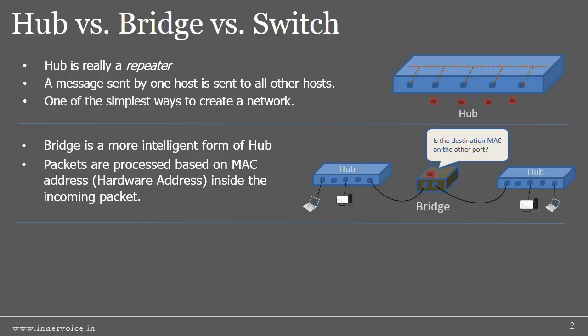A packet reaches a bridge on one of its ports, and the bridge then checks whether the destination MAC address can be reached via the other port. If yes, the packet is sent via the other port.